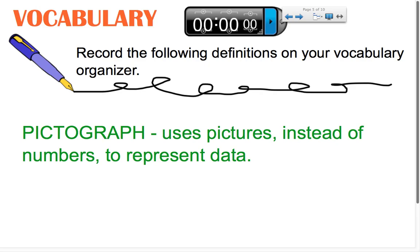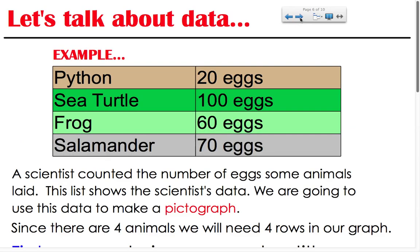All right, time's up! As we move along, remember, if you didn't get a chance to finish your vocab organizer, you can always find our math vocabulary hanging on our math word wall in the classroom. So, let's talk about our data. Here we have a scientist who counted the number of eggs that some animals had laid. The list above shows the scientist's data. We're going to use this data to make a pictograph.